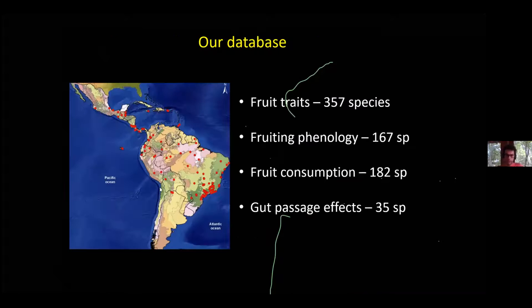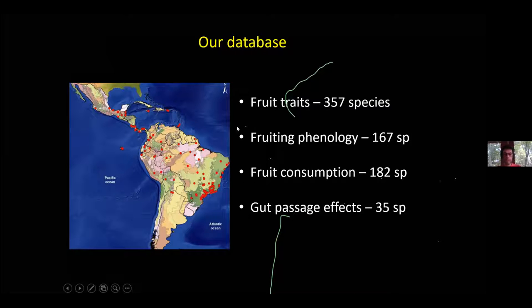We have a dataset for fruit traits of 360 species. For fruit phenology, the number of species differs for different traits because this information is really scattered in the literature — mining it all is really time-consuming, and all the credits again go to João. We have data spread across the Neotropics, but as you can see, our dataset is far from complete. For gut passage, we have 35 species.